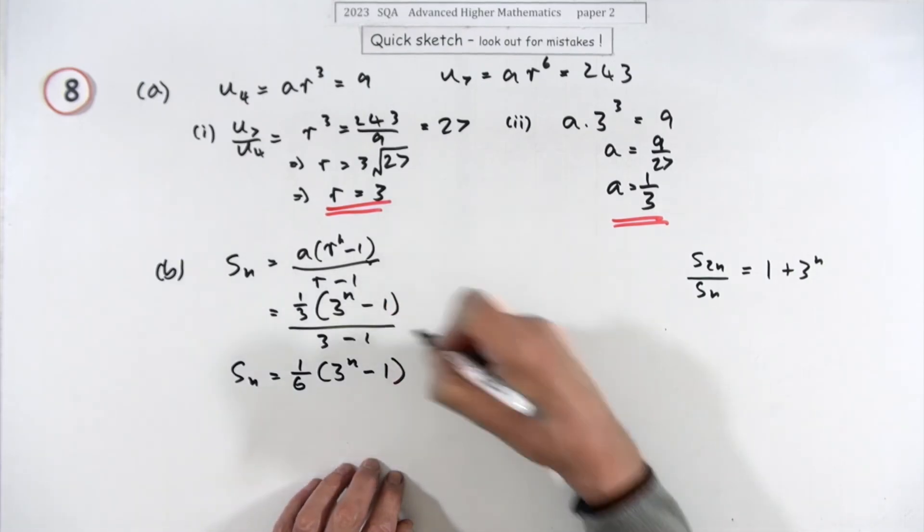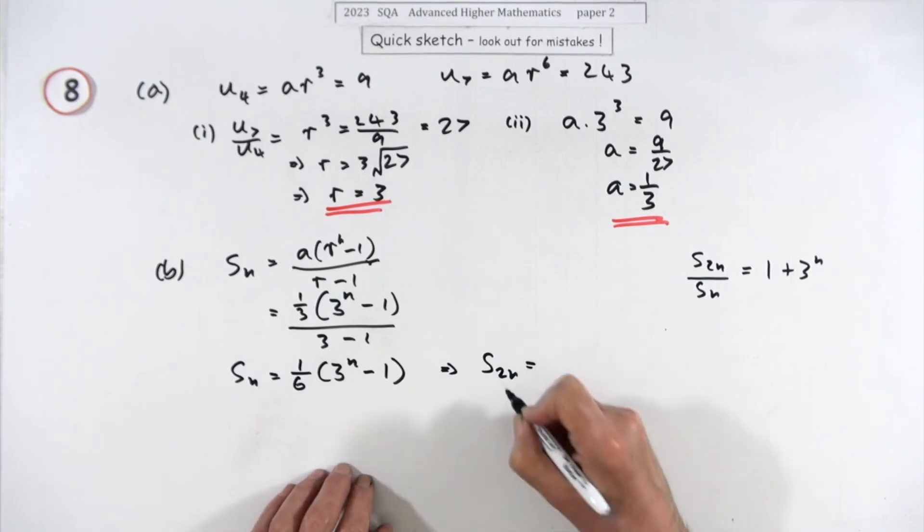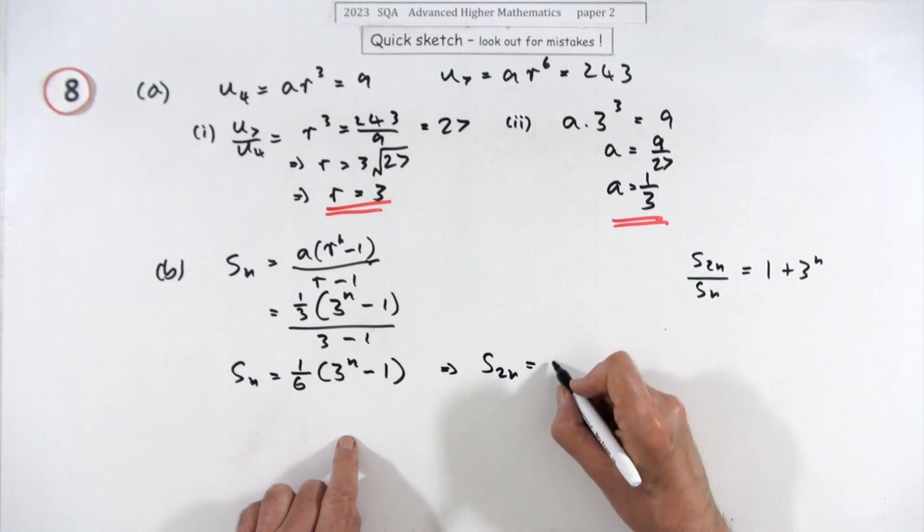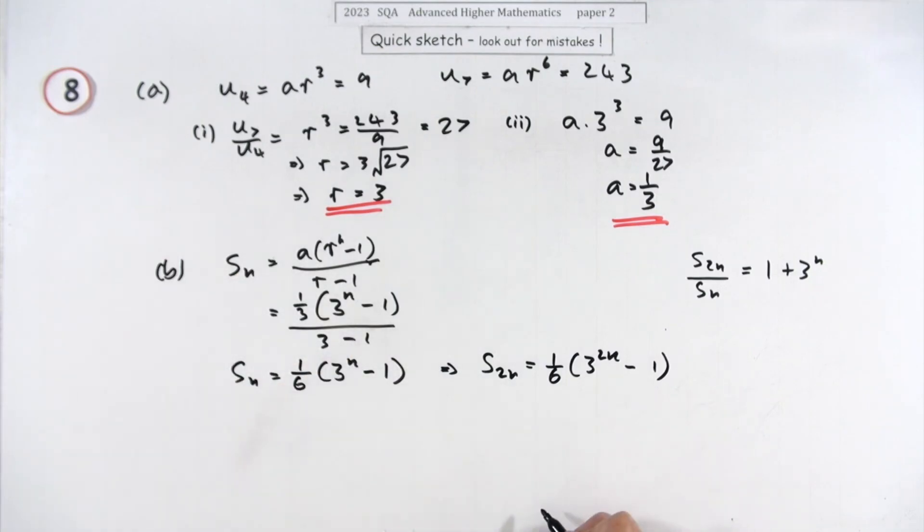Now that means, just by going through the same process again, that the sum of the first 2n terms, since the only thing that affects n is this 3 here, must be a sixth of 3 to the 2n minus 1, because the rest of the calculations would be the same.